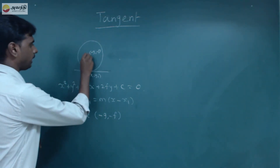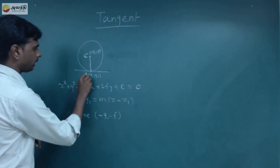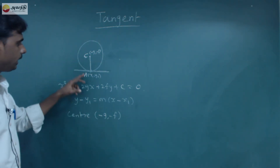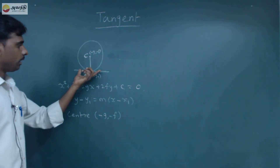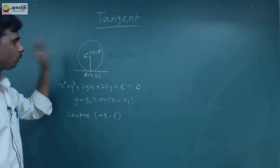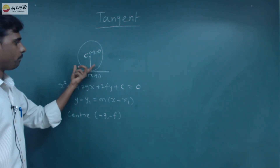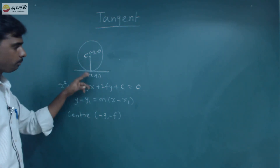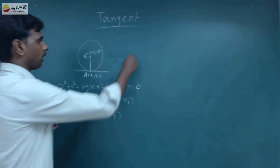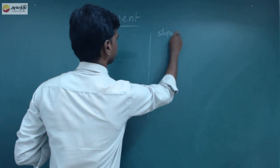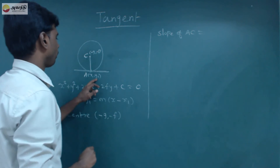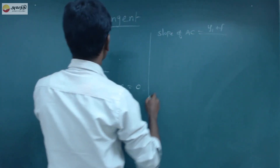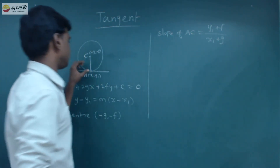That is, the point is center C, and this point is A. If C is a line, we can take the slope of this line. This line is perpendicular. The slope is m, so the slope of CA is m. The slope of line AC equals (y1 + f) divided by (x1 + g).